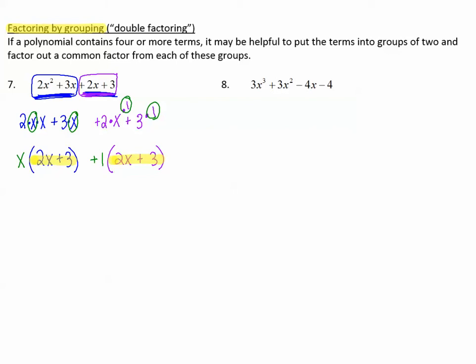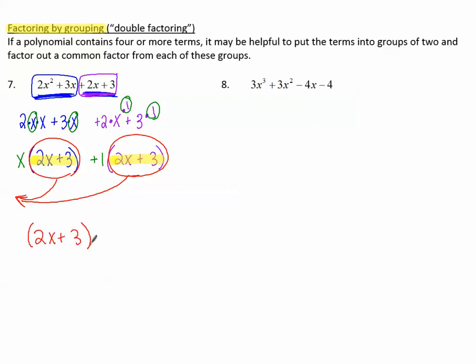So now I factor again the common factor — this is why it's called double factoring. First I factored out the GCF from each group, and now I factor out the common binomial. I take out 2x plus 3, which is in common, and undistribute that. What's left over is x plus 1. And this is the factored form of that original polynomial.